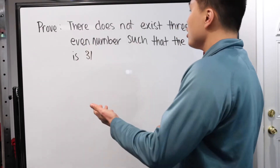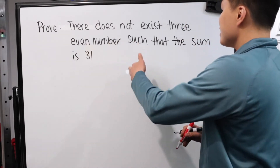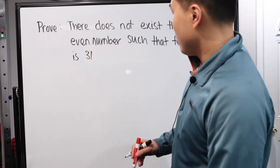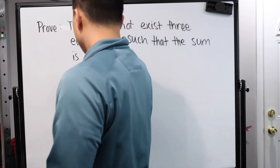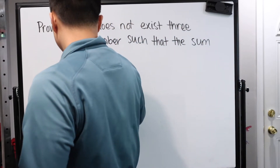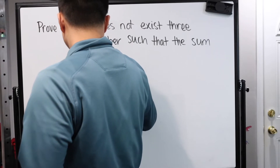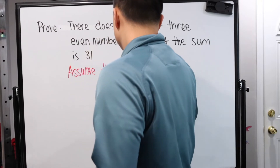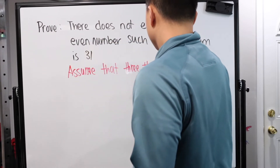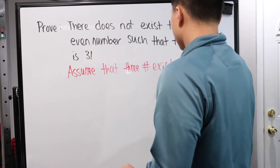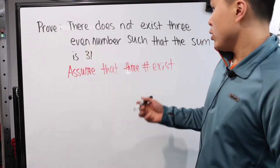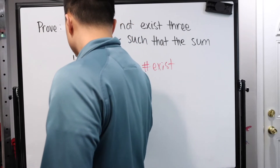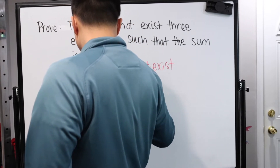Let's look at another one: there do not exist three even numbers such that their sum is 31. If we're going to use proof by contradiction, we assume the opposite — assume that the three numbers do exist, and that A plus B plus C equals 31.